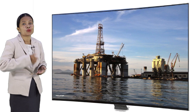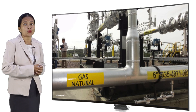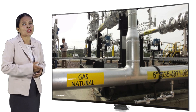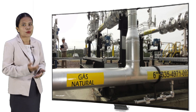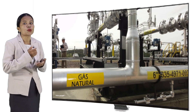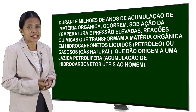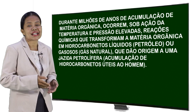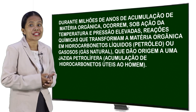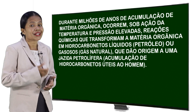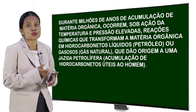O petróleo e o gás natural constituem duas importantes fontes de energia não renováveis. Tal como no processo de formação dos carvões, a acumulação de restos de seres vivos no fundo do mar ou de lagos inicia a formação do petróleo e do gás natural, maioritariamente composto por metano. Durante milhões de anos de acumulação de matéria orgânica, sob ação de temperatura e pressão elevadas, ocorrem reações químicas que transformam a matéria orgânica em hidrocarbonetos líquidos, o petróleo, ou gasoso, o gás natural, dando origem a uma jazida petrolífera, a acumulação de hidrocarbonetos úteis ao homem.